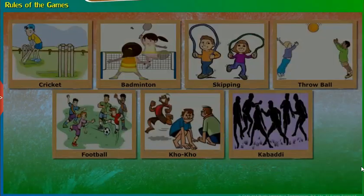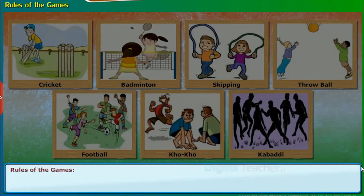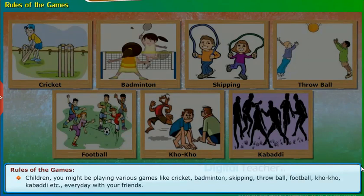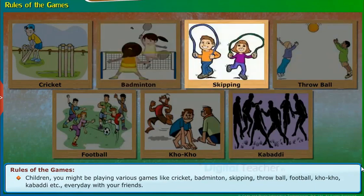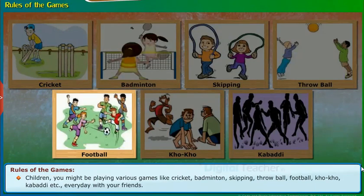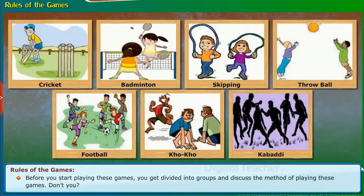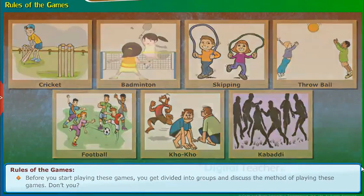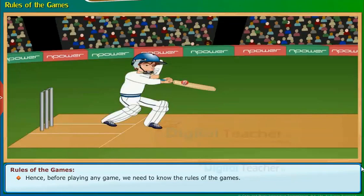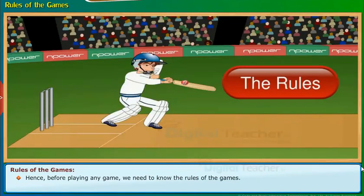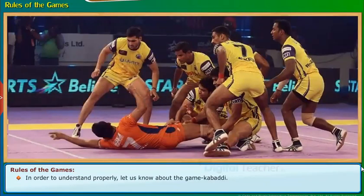We will now start our learning with the topic: rules of the games. Children, you might be playing various games like Cricket, Badminton, Skipping, Throwball, Football, Coco, Kabaddi, etc. everyday with your friends. Before you start playing these games, you get divided into groups and discuss the method of playing. Hence, before playing any game, we need to know the rules of the games. Each game has certain rules which are to be followed. In order to understand properly, let us know about the game Kabaddi.